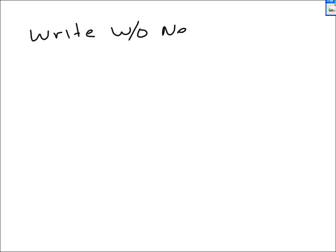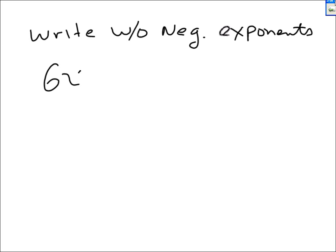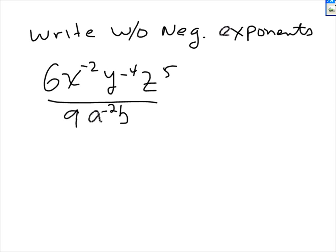Final answers should, unless otherwise stated, really not have negative exponents. So it's a good exercise to learn how to write things without negative exponents. The instructions here are to write without negative exponents. For example: 6 times x to the negative 2 times y to the negative 4 times b to the 5th, divided by 9 times a to the negative 2, b cubed, c to the 4th power.